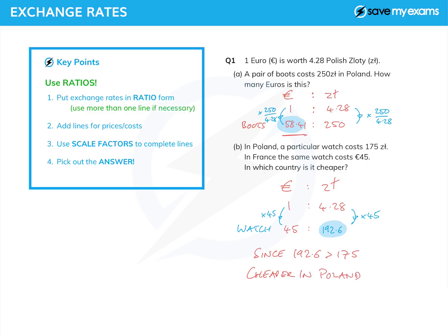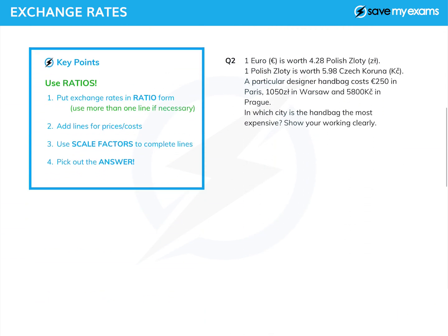So there you go — a couple of questions with one exchange rate. Let's do something with two exchange rates. I have the same exchange rate for euros and zloty, and I'm also given that one zloty is worth 5.98 koruna in the Czech Republic. A particular designer handbag costs 250 euros in Paris, 1,050 zloty in Warsaw, and 5,800 koruna in Prague. We're asked in which city is the handbag the most expensive? Let's write down euros to zloty to Czech koruna.